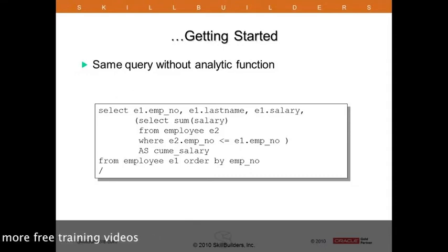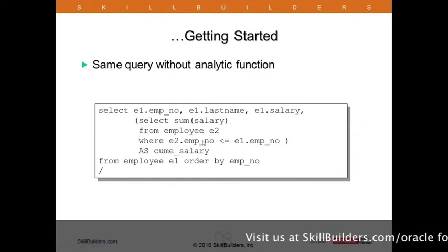So let's take a look at the workaround. This was the old way to do it before analytic functions. What did we have to do? We selected the employee number, last name, and salary. But now we have a subquery within the select clause for the next column. And remember, this is supposed to be running totals. So we're going to use a trick, a workaround. We're going to select sum of salary from employee E2, the same employee table, but the outer employee table is E1, the inner one is E2.